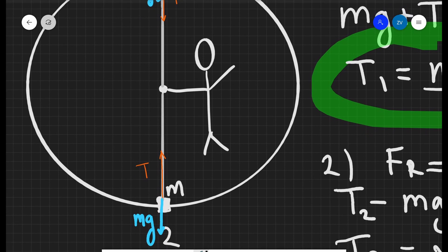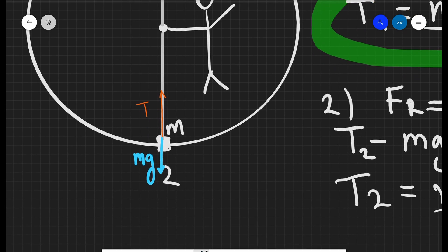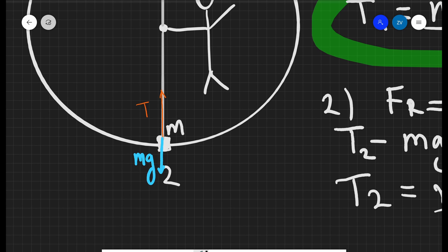In the second position here though, it's the other way around. So the weight is acting in the opposite direction to the centripetal force. So in order to keep the object moving at a constant velocity along the circle, the tension has to be increased in order to maintain that speed.